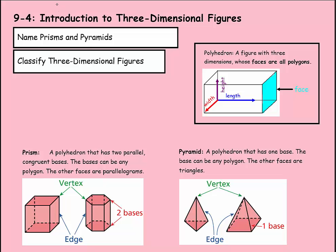We're on lesson four of chapter nine, which is an introduction to three-dimensional figures. First we're going to name prisms and pyramids, then we're going to classify three-dimensional figures.